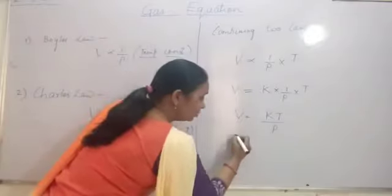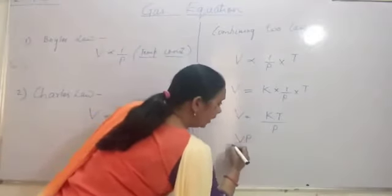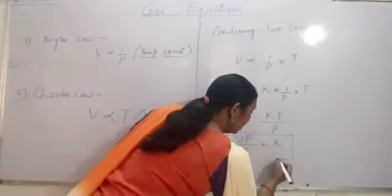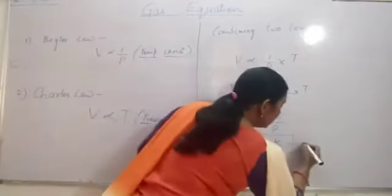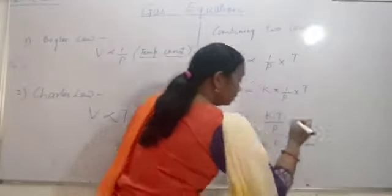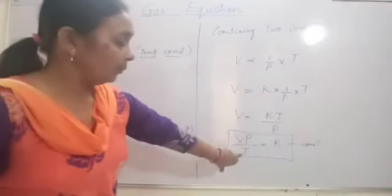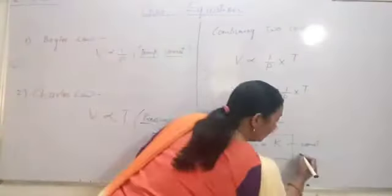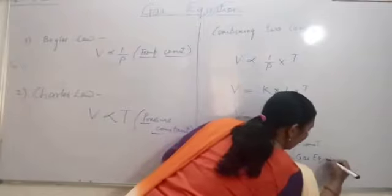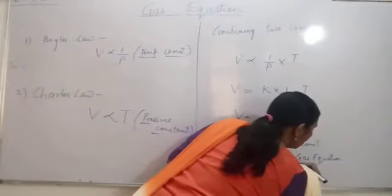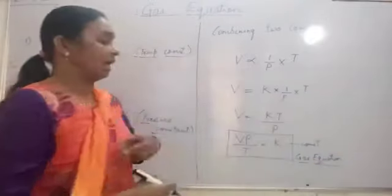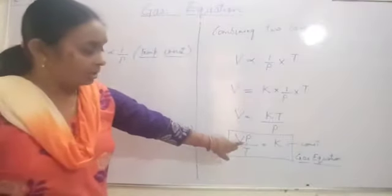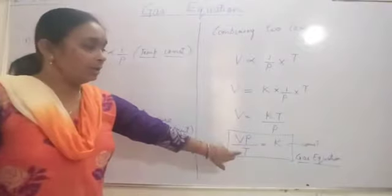This can be rearranged as V × P / T = K, where K is a constant. This equation — VP/T = constant — is known as the gas equation. We will use this equation when we have to calculate the volume when both pressure and temperature are changing simultaneously.